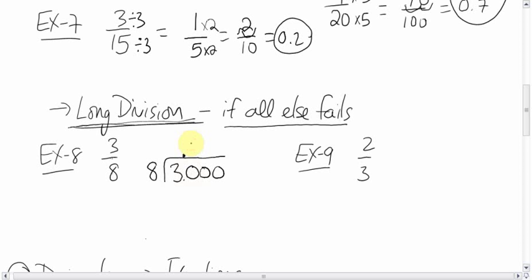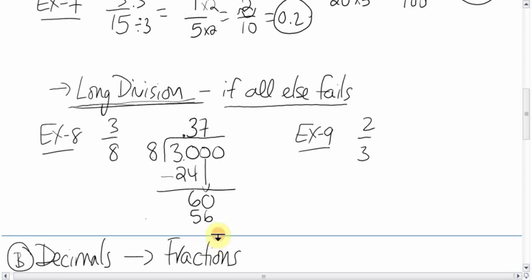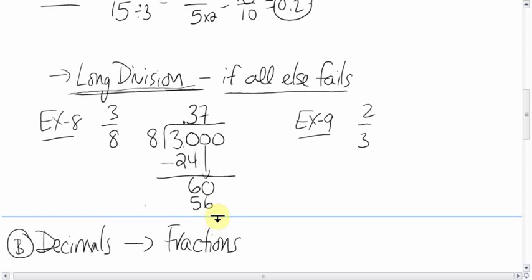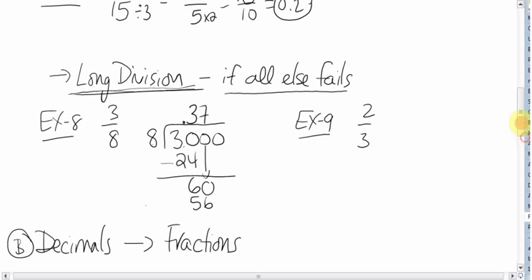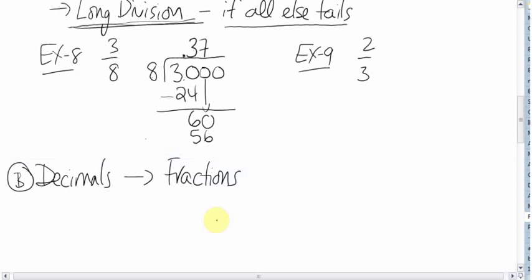8 goes into 30 three times. That gets you 24. When you subtract, you get 6. 8 doesn't go into 6, so you bring down the zero. You get 60. 8 goes into 60 seven times. 7 times 8 is 56. You subtract, you get 4. Bring down the zero, you get 40. 8 goes into 40 five times. That gives you 40, you subtract, you get 0. There's your answer, the answer is 0.375.